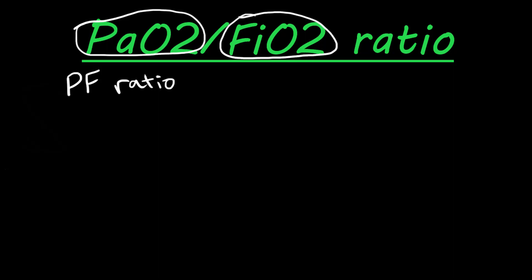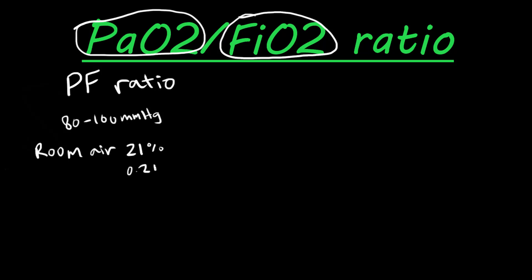Normal PaO2 is usually around 80 to 100 millimeters of mercury. And then fraction of inspired oxygen — on room air there's normally 21% oxygen, so this would be 0.21. Or if they're on some kind of oxygen supplement, that would be their fraction of inspired oxygen.